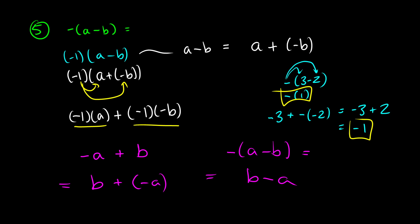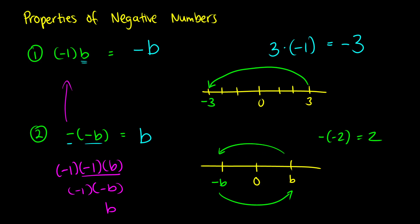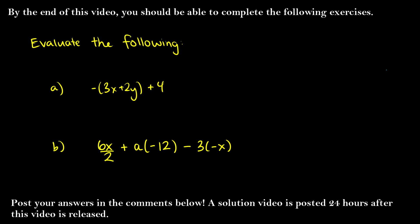That's it for the properties of negative numbers. At this point you should be able to identify and evaluate the following expressions. These have variables in them, but remember we treat variables just as dummy things — we don't really touch them. A solution video will be posted within 12 hours. Feel free to post your answers in the comments below, and as always, if you have questions, feel free to ask.